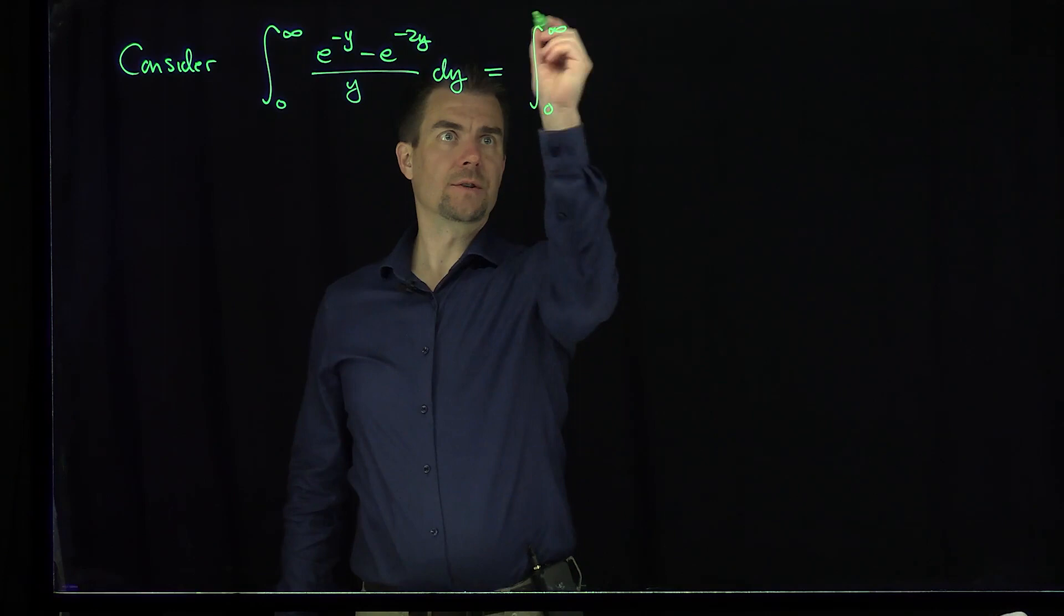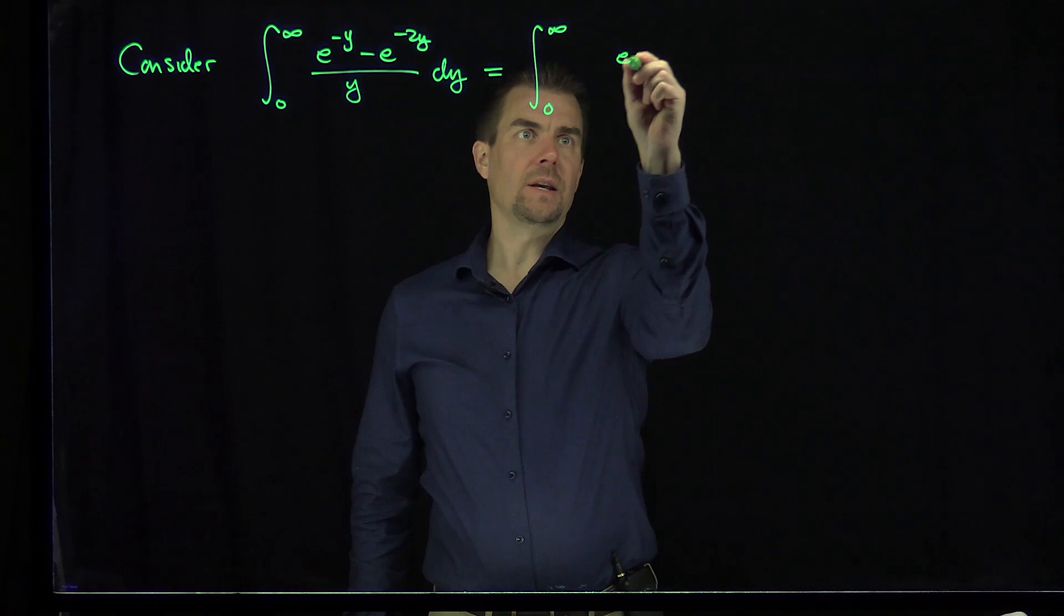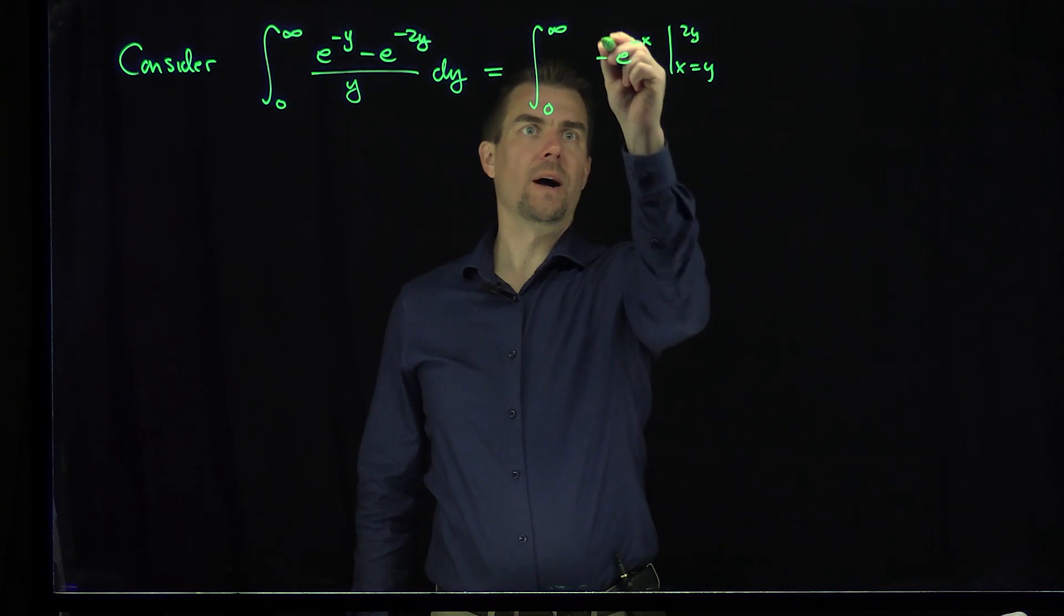What we can do is recognize the numerator of this integrand as an antiderivative. This is going to be the antiderivative of e^(-x), with x going from y to 2y.